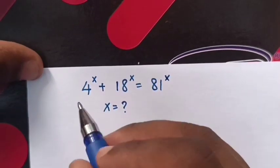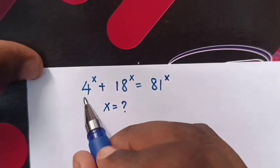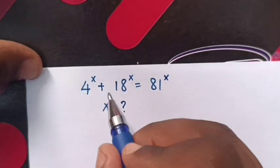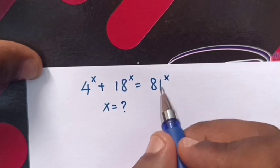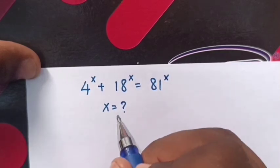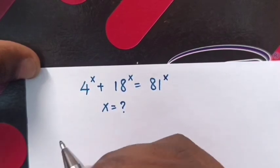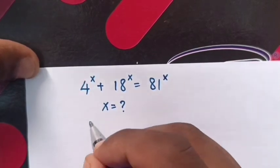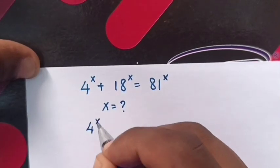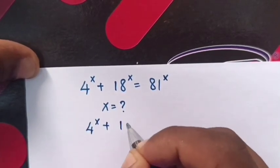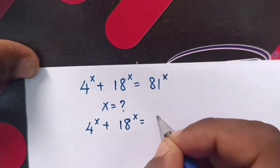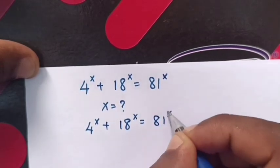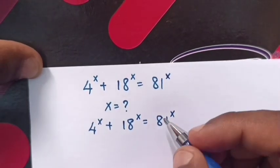Hello. How to solve 4 power x plus 18 power x plus 81 power x — find the value of x from 4 power x plus 18 power x is equal to 81 power x.